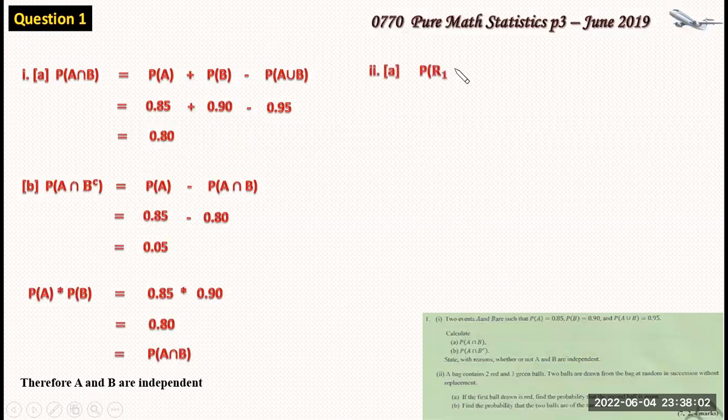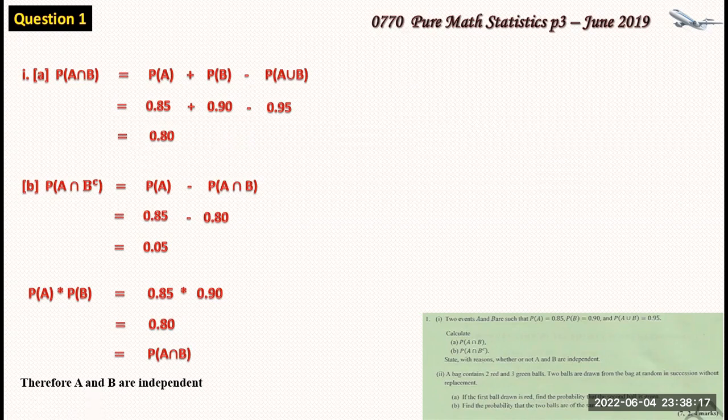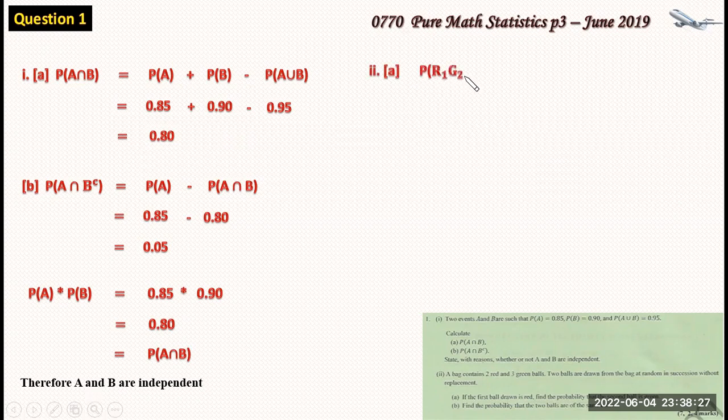So this bag contains two red balls and three green balls. And we have been told that two balls are drawn from the bag at random in succession and without replacement. A, find the probability that the first ball drawn is red and the second is green.